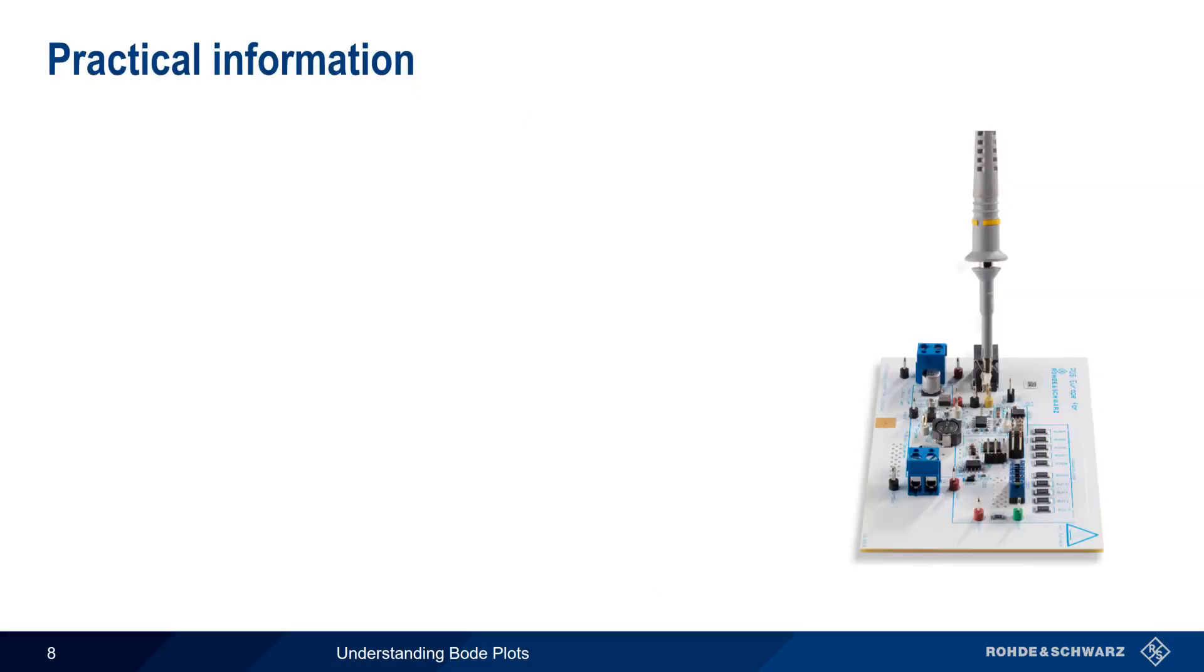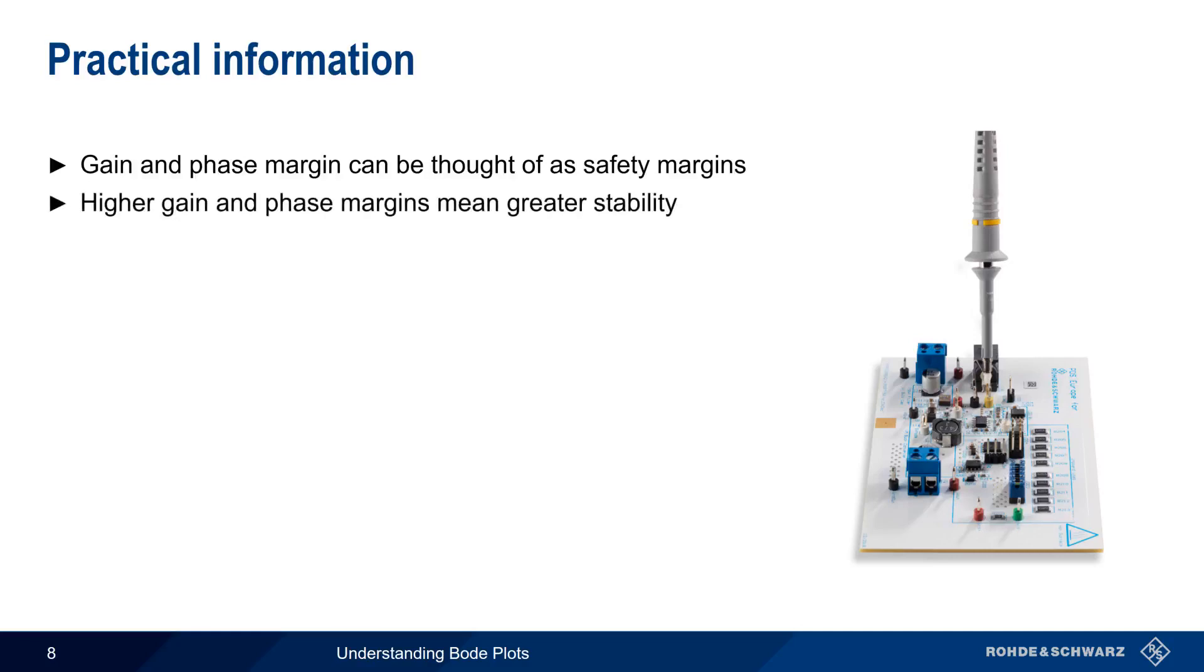The reason that we refer to these as gain and phase margins is because they represent the distance from the points at which instability could occur. And generally speaking, the greater the distance, or margin, the better. Another way of saying this is that higher gain and phase margins mean greater stability.